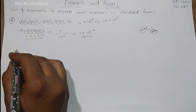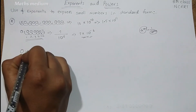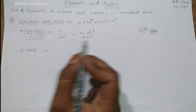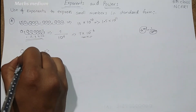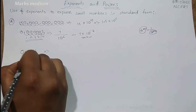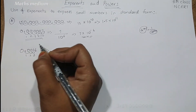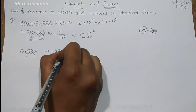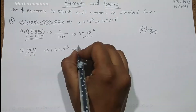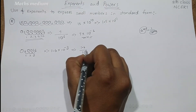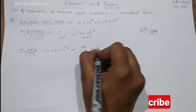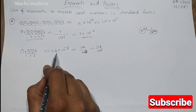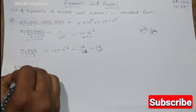Next, if you take another number: 0.0016. How can we write it in standard form as a decimal number? The decimal point moves 1, 2, 3 places. So after 3 places, it becomes 1.6 into 10 power minus 3. Why? Because we can write it as 1.6 divided by 10 power 3, and by using the formula, that becomes 1.6 into 10 power minus 3.